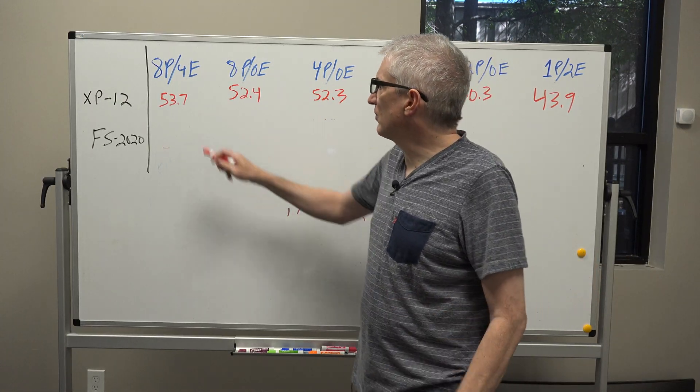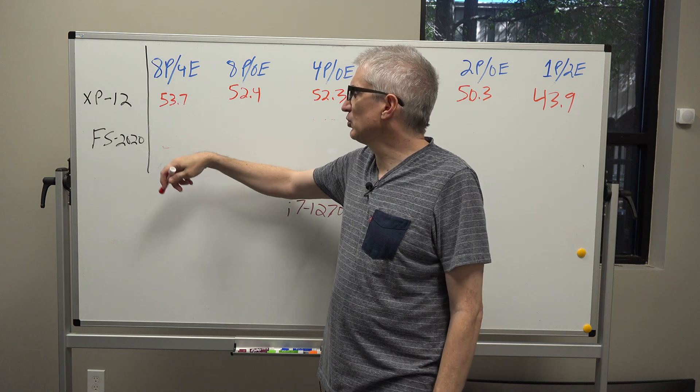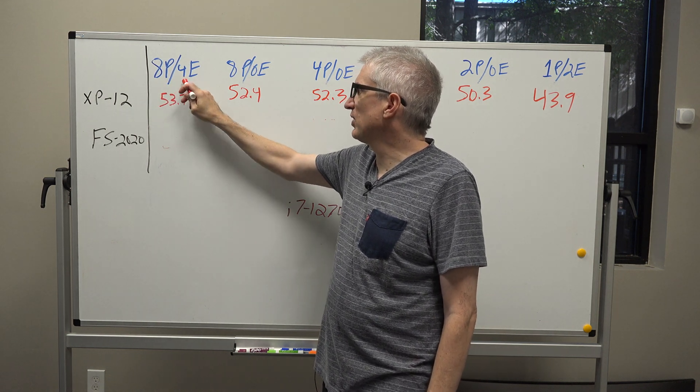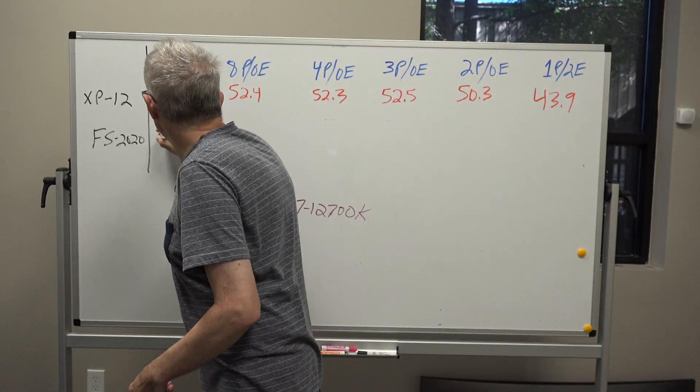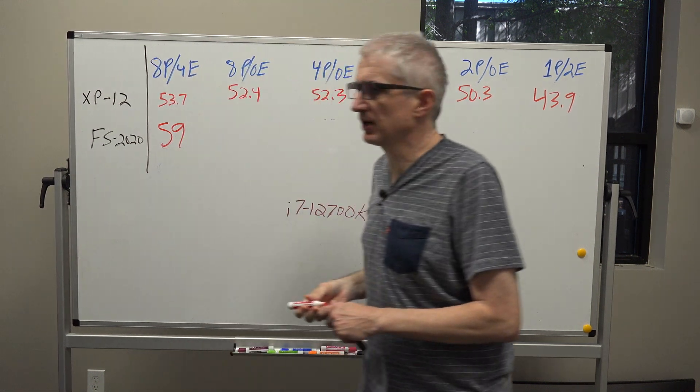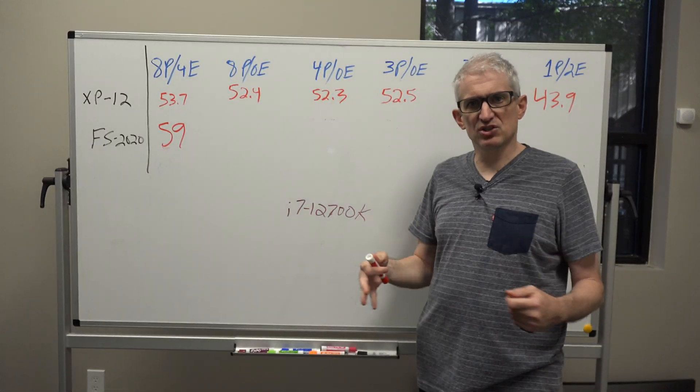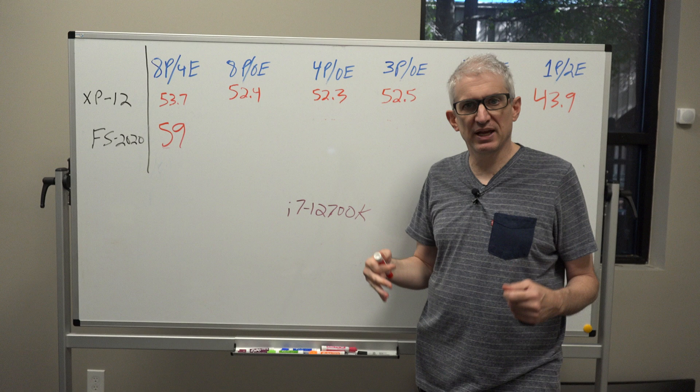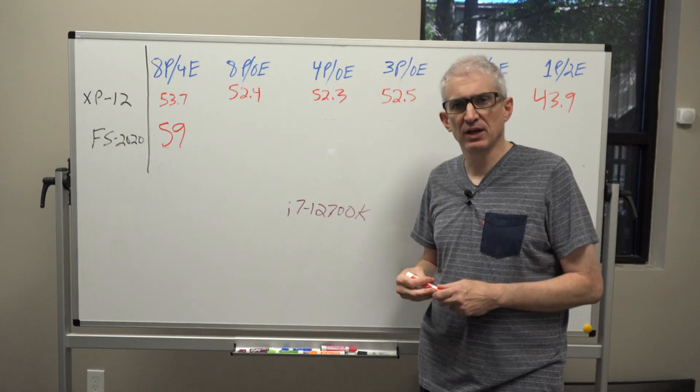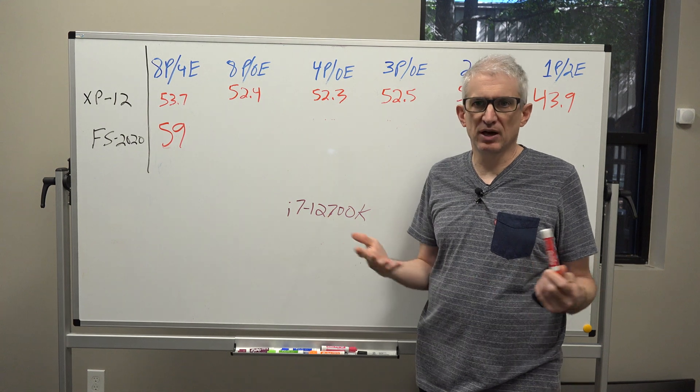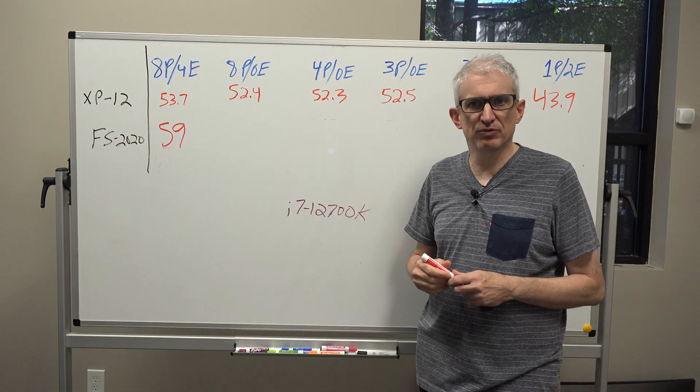So initially I ran Flight Sim 2020 on eight performance cores and four efficiency cores, in other words all of the cores, and I got 59 frames per second. This is a very basic test. It's just a single 1080p display running global ultra settings for the 3080 Ti. I just went to LaGuardia Airport, sat on the runway, and recorded the frame rate.